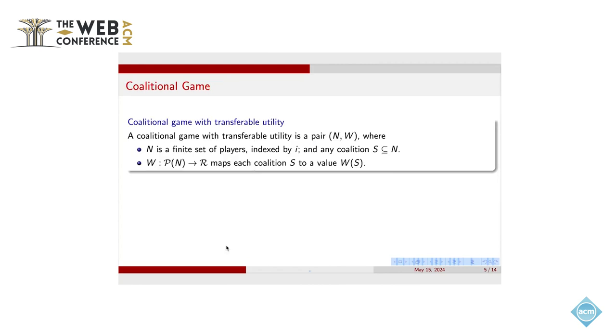The notion core comes from the coalitional games. Let me introduce a little about the coalitional game. It's a pair N and W. The N is the set, the finished set of players. And any subset of the N can constitute a coalition. And the W is a mapping function. It maps any coalition to a real value. And this value W characterizes how valuable this coalition is.